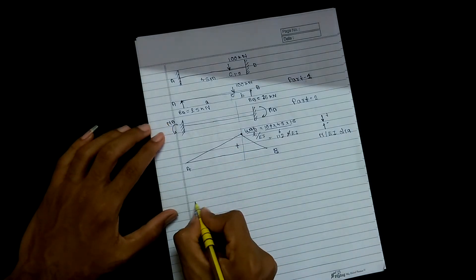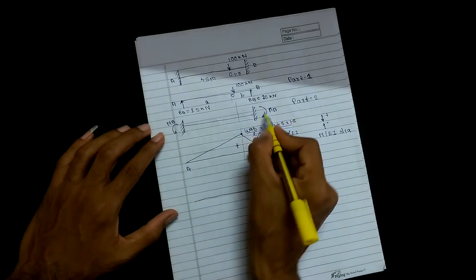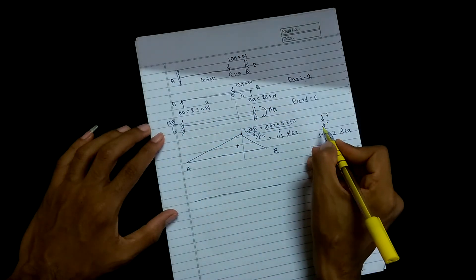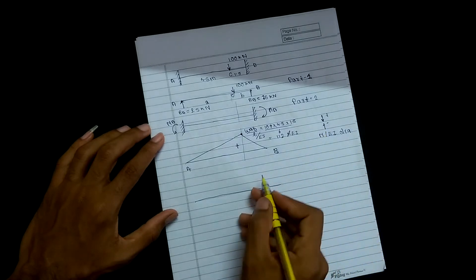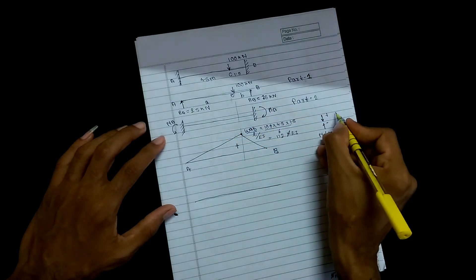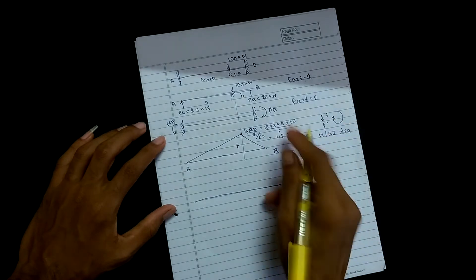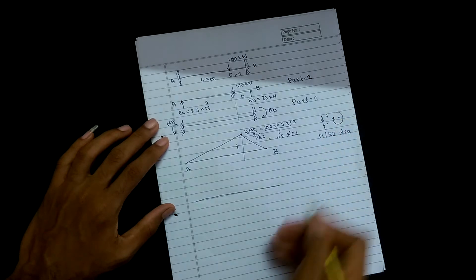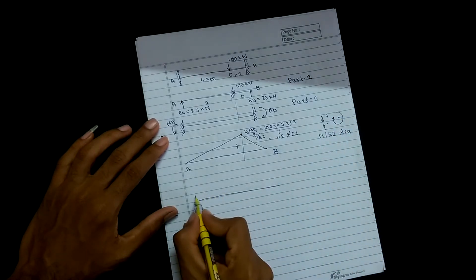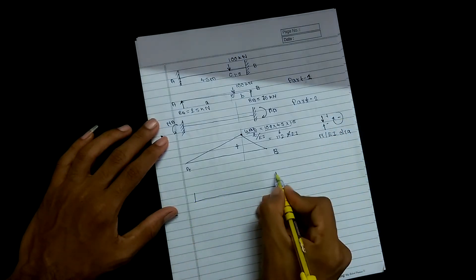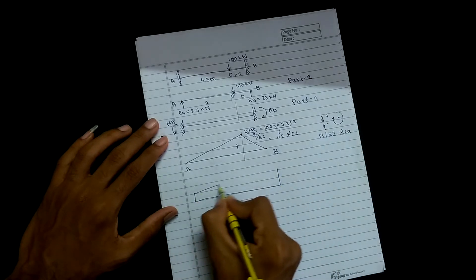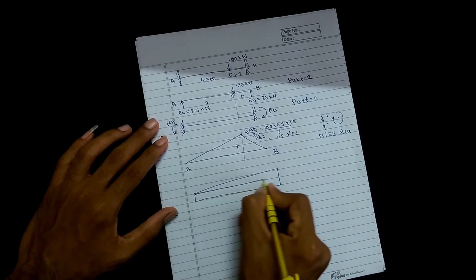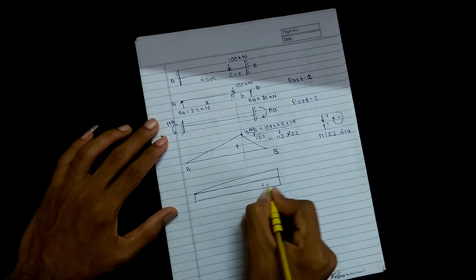For part 2, the moments MA and MB are applied. I have taken clockwise as negative, so the M/EI diagram for part 2 shows negative MA and negative MB. This second part can be divided into two sub-parts: a rectangle and a triangle.